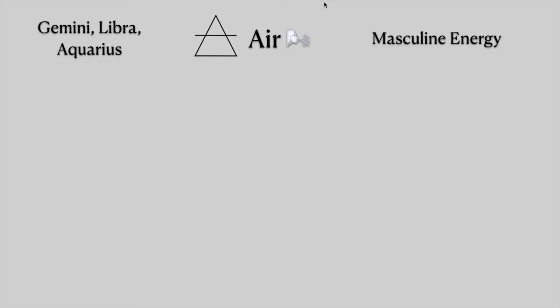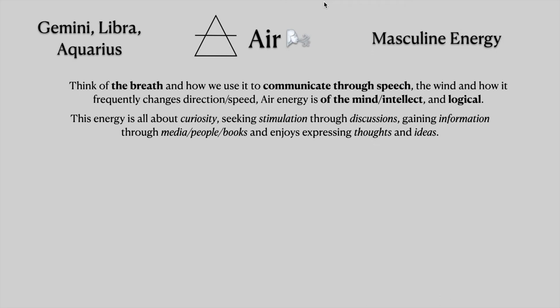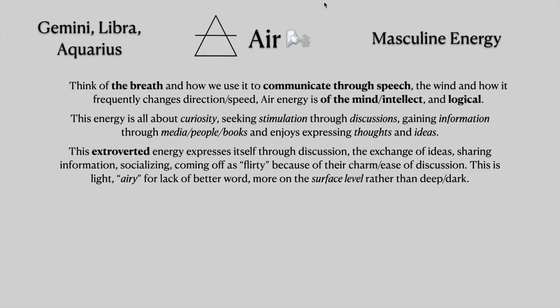Next up we have air, which is Gemini, Libra, and Aquarius. This is masculine energy. Think of the breath and how we use it to communicate through speech, the wind and how it frequently changes direction and speed. Air energy is of the mind and intellect and very logical. This energy is all about curiosity, seeking stimulation through discussions, gaining information through media, people, books, and enjoys expressing thoughts and ideas. This extroverted energy expresses itself through discussion, the exchange of ideas, sharing information, socializing, coming off as flirty because of their charm and ease of discussion. This is light, airy — more on the surface level rather than deep and dark energy.